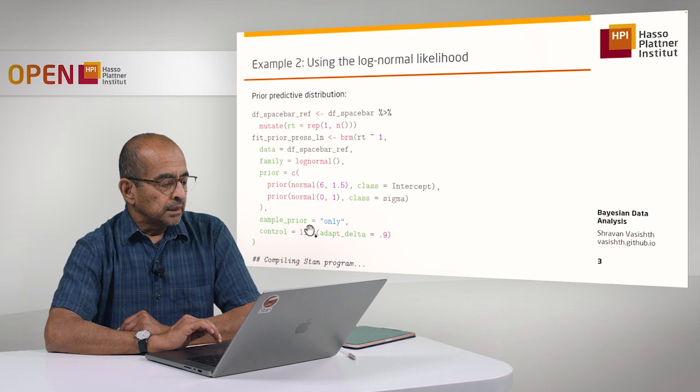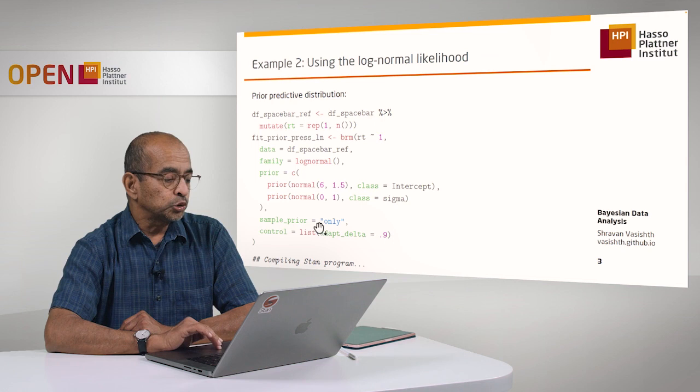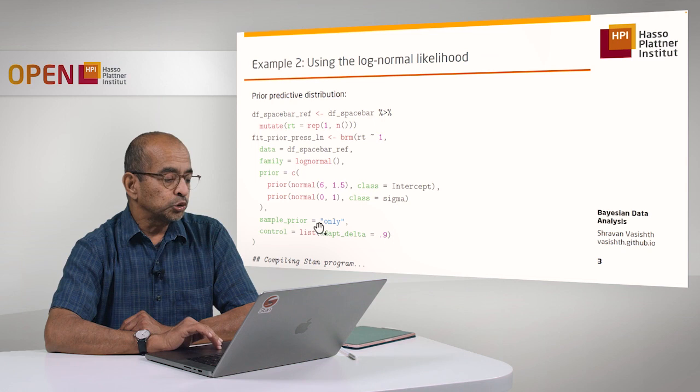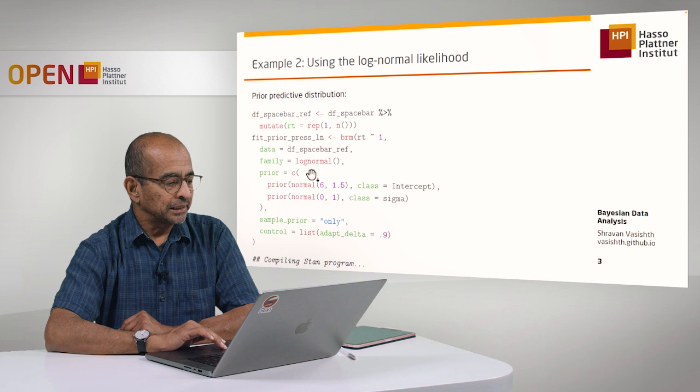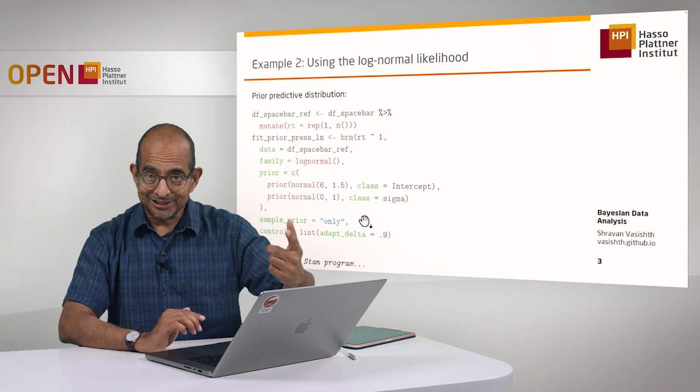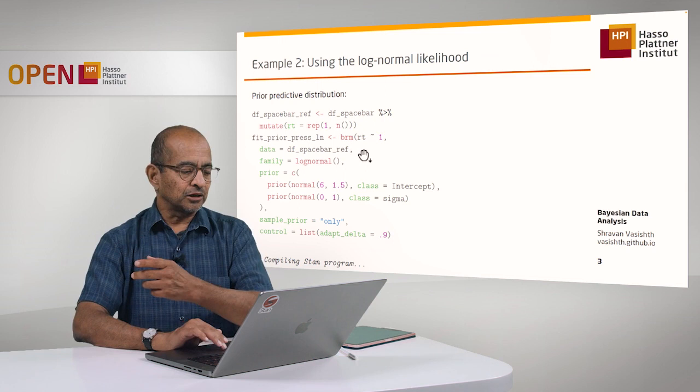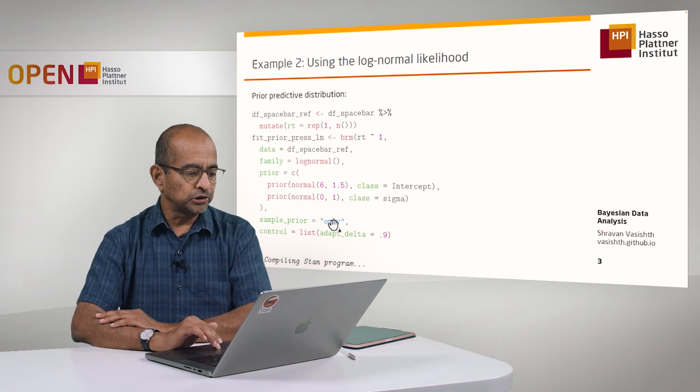Notice what I'm doing here—I've specified a new command that you haven't seen before: sample_prior = only. What this is doing is, although it's going to take the data as input, it's not going to look at that data at all. It's only going to produce samples from the prior. This is one way to use the BRMS package to produce prior predictive distributions. You do have to specify the data frame in the model, but the function will not use that data to produce prior predictive data.